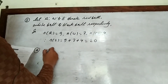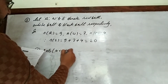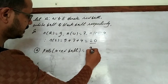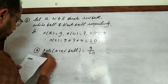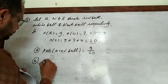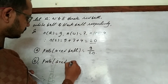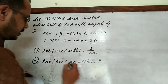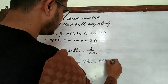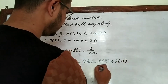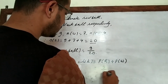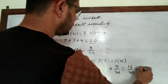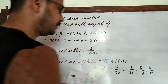Part (a): probability of getting a red ball — there are 9 red balls and 20 total, so P(R) = 9/20. Part (b): probability of getting a red ball or a white ball. Since these are mutually exclusive events, P(R or W) = P(R) + P(W) = 9/20 + 7/20 = 16/20 = 4/5.